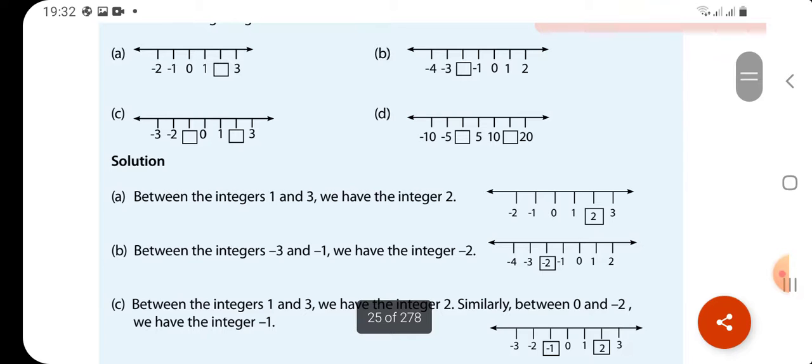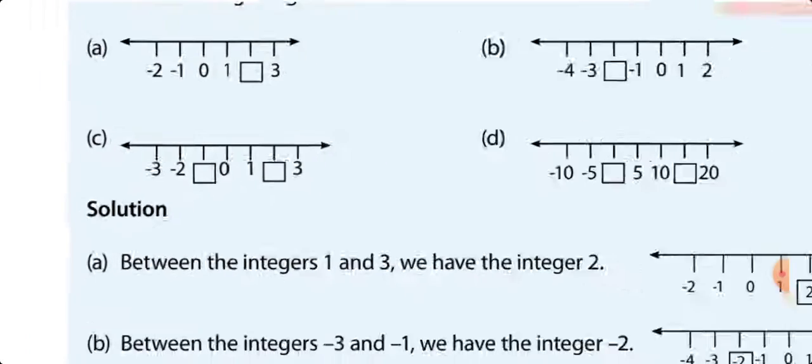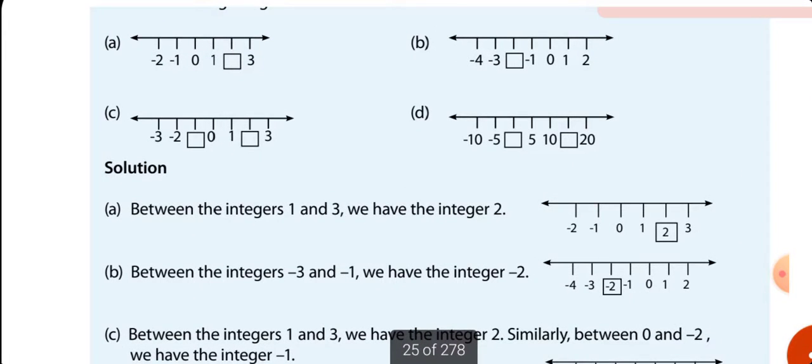On a number line here, what are the integers missing? For A, it is going to be 2. For B, it is going to be negative 2. For C, negative 1 and 2. For D, it is 0 and 15.